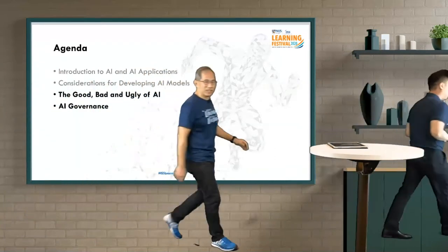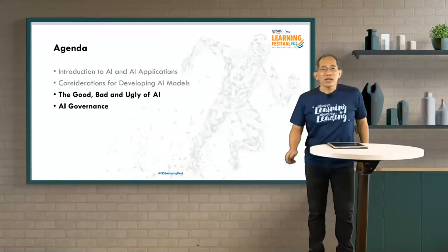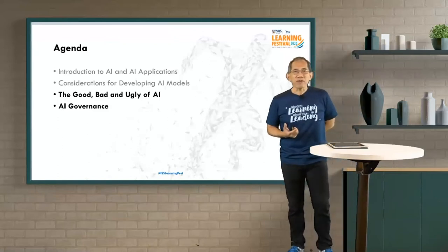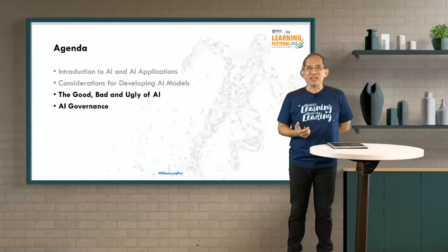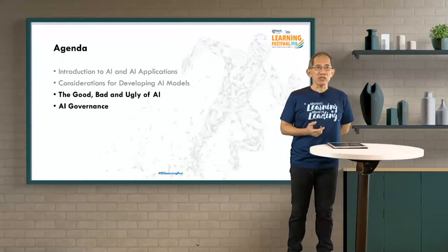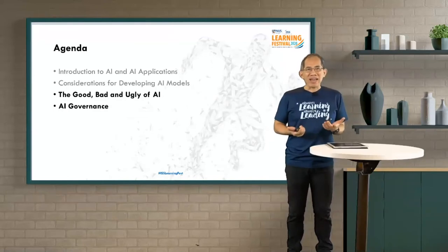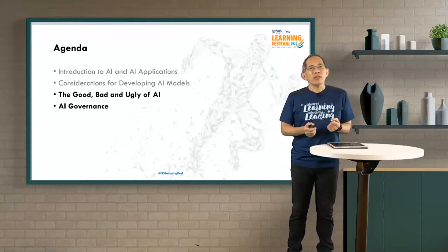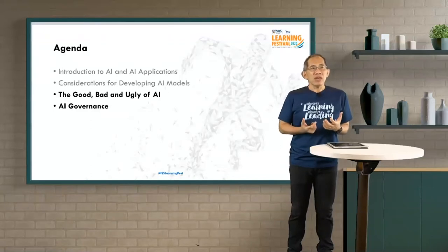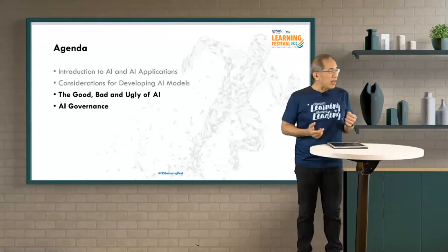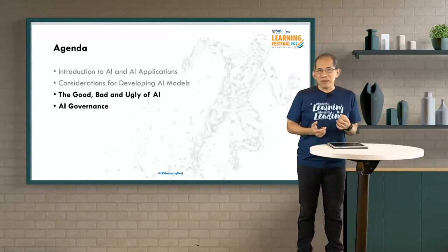Thanks, Brian. Good afternoon. Brian has talked about how to develop an AI system and what considerations go into developing an AI model. What I'm going to cover next is examples of AI models in use — the good, the bad, and the ugly. With anything new, when people don't have a history of using a particular technology, there will be instances where they use it in a good way, in a bad way, in an ugly way. Let's take a look at some examples.